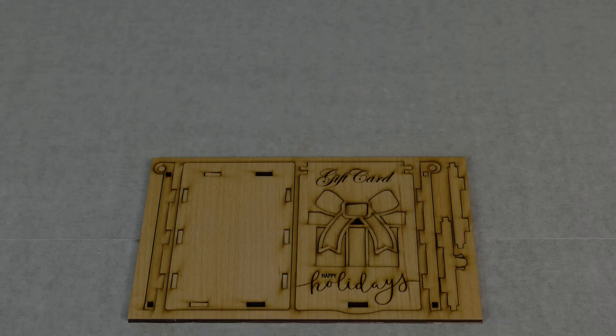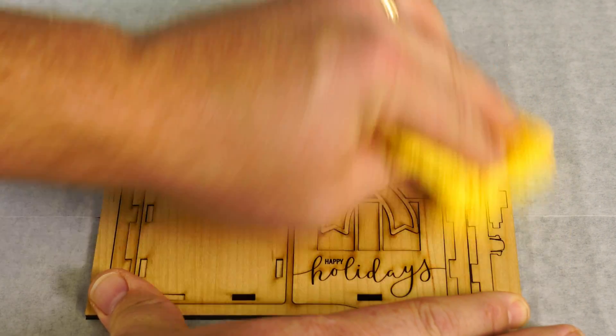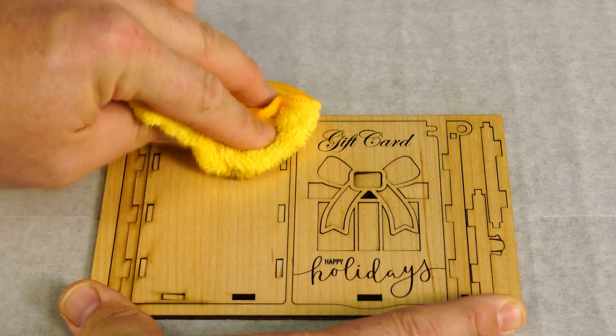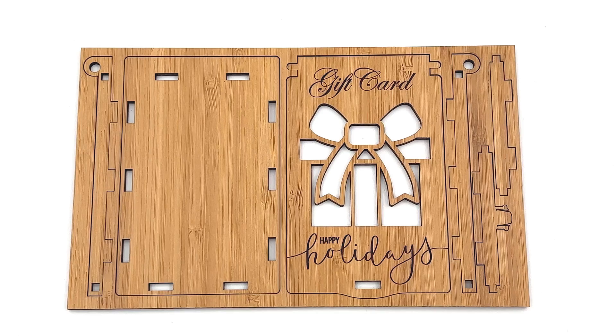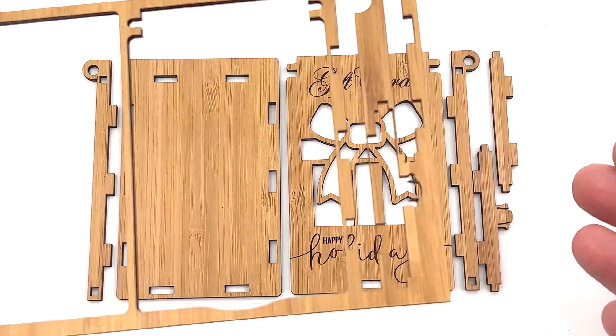Once finished, wipe the material surface clean of any residue with a damp cloth from the engraving and cutting process and remove it from the laser. I used a piece of masking tape to remove all the parts simultaneously from the laser system. The finished clean part should look like this.